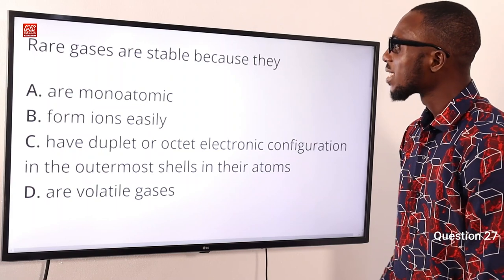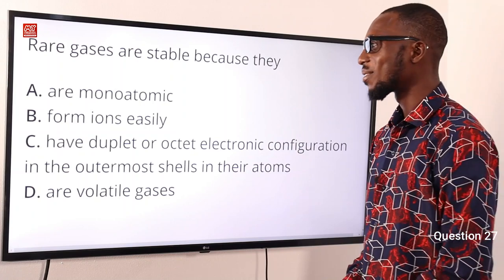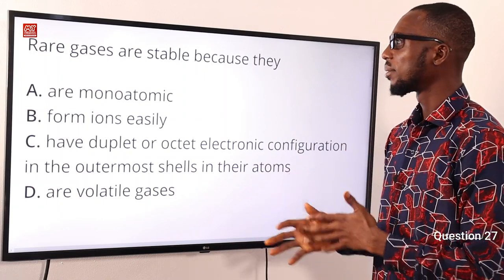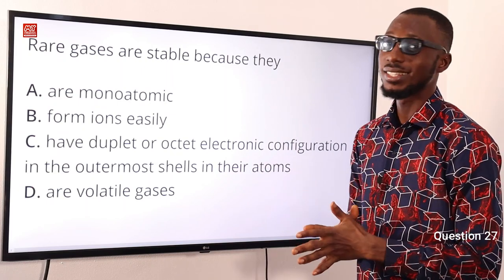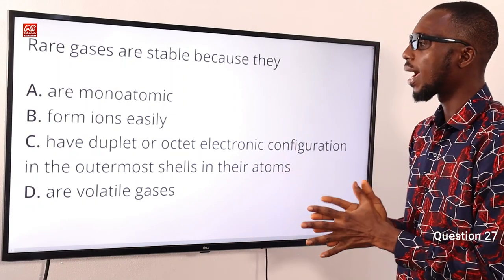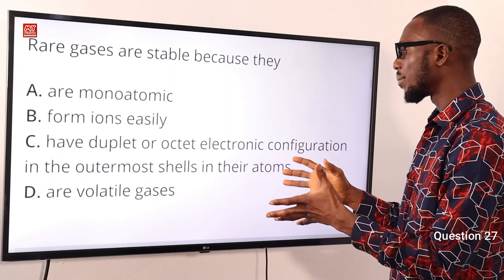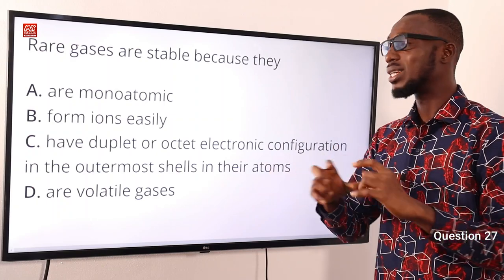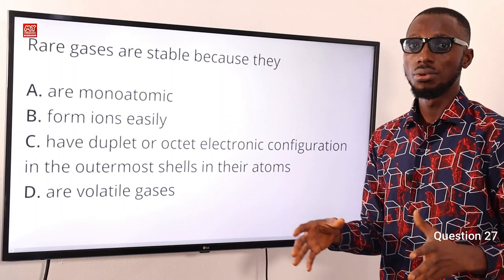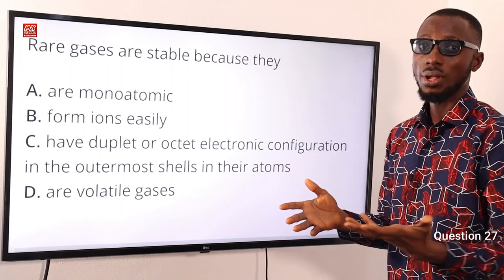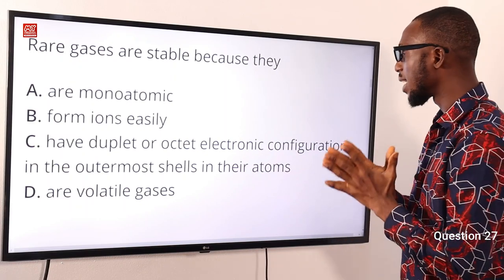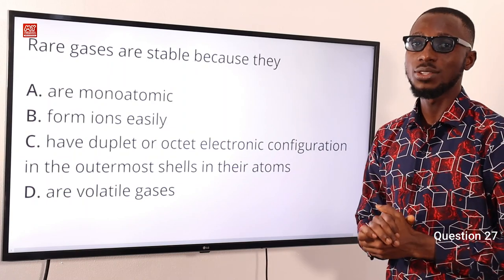Question 27: Rare gases are stable because they are what? They are not stable simply because they are monatomic — other monatomic gases like the halogens can be very reactive. Rare gases are stable because they have duplet or octet electronic configuration in their atoms. There are no bonding electrons in their outer shell, which accounts for their stability. We are talking about neon, argon, krypton, radon, and xenon. The correct option is option C.